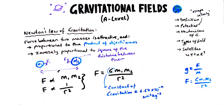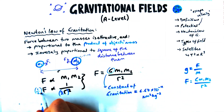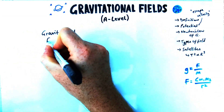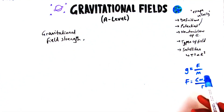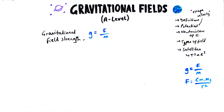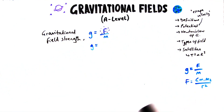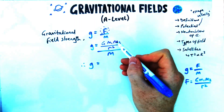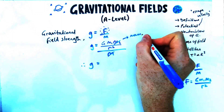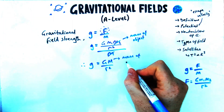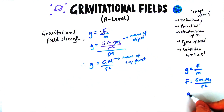The relationship works like this: if you double the distance, the force gets quartered; if you double the mass, the force doubles. Now, we defined gravitational field strength as force per unit mass, or F/m. We've got an expression for F, so we can derive another expression for gravitational field strength. Dividing F = GM₁M₂/r² by one of the masses, that mass cancels, leaving us with g = GM/r², where M is the mass of the planet.